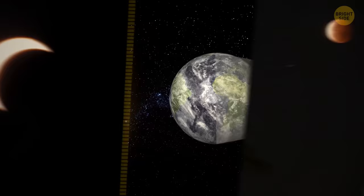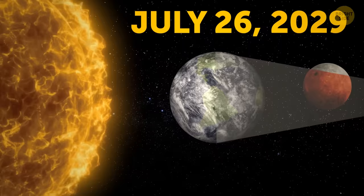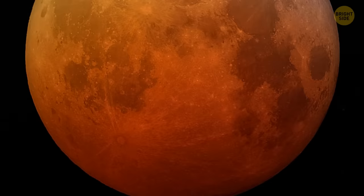And according to scientists, on July 26, 2029, we'll see one of the darkest eclipses in the last 100 years. The eclipse itself will last approximately 1 hour and 42 minutes, and the whole event, from the moment Earth's shadow touches the Moon until the satellite leaves it, will last about 3 hours and 40 minutes. The event will be best seen in South America, so book your tickets now.